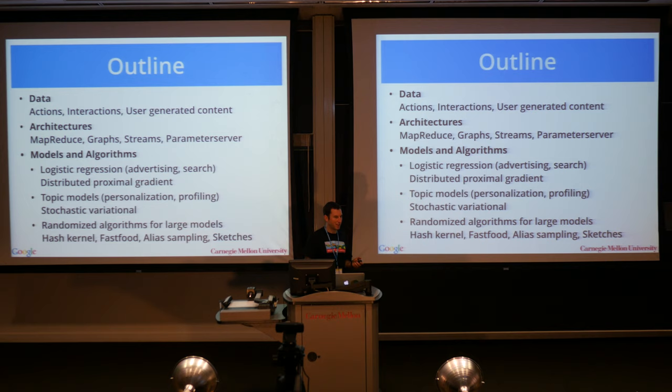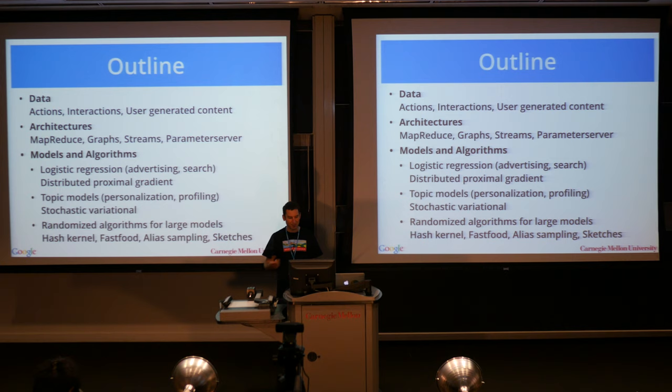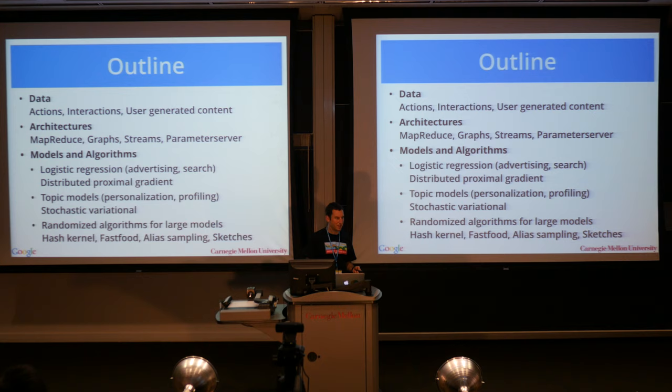What I'll then switch to is actually a number of models and algorithms — how to solve those problems at scale. We'll basically deep dive into a select set of models, mostly topic models, and we'll do a bit of warm up with logistic regression and so on. If we get to it, we'll look a little bit at randomized algorithms. Andrew Wilson is going to cover that a lot more also in his lectures, in the context of fast food. And yeah, this is sort of the outline of what we'll get to this week.